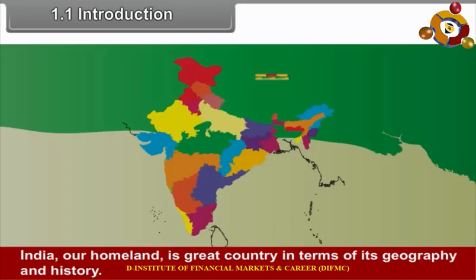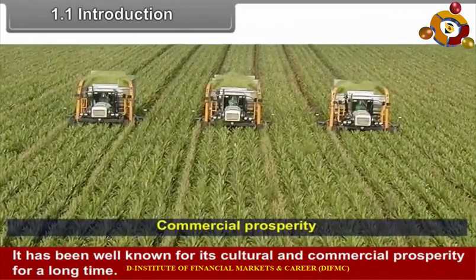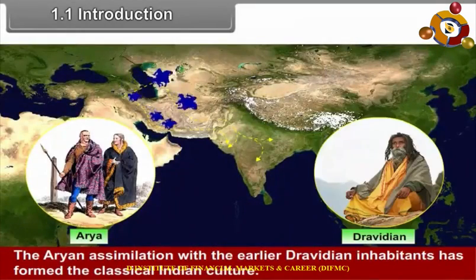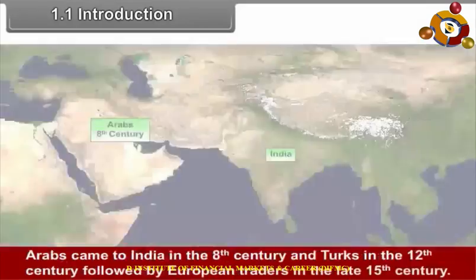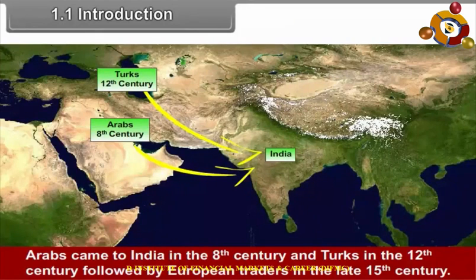India, our homeland, is a great country in terms of its geography and history. It has been well known for its cultural and commercial prosperity for a long time. The Aryan assimilation with the earlier Dravidian inhabitants has formed the classical Indian culture. Arabs came to India in the 8th century, Turks in the 12th century, followed by European traders in the late 15th century.